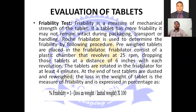The percentage of friability is calculated as: one minus (loss in weight divided by initial weight) multiplied by 100. Loss in weight is calculated as initial weight minus final weight. For example, if the initial weight of 10 tablets is 1500 mg and after friability it is 1460 mg, then loss in weight is 40 mg. So 40 mg divided by 1500 mg multiplied by 100 gives the percentage friability.